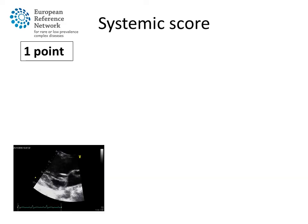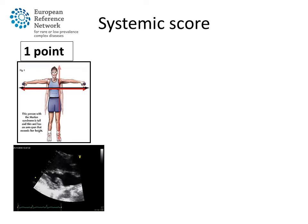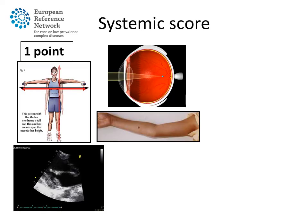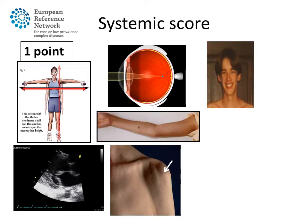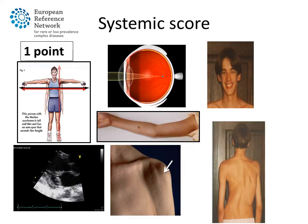One point is assigned to the manifestations of mitral valve prolapse, increased arm span, myopia, abnormal elbow extension, stretch marks, facial characteristics, and scoliosis and/or kyphosis.